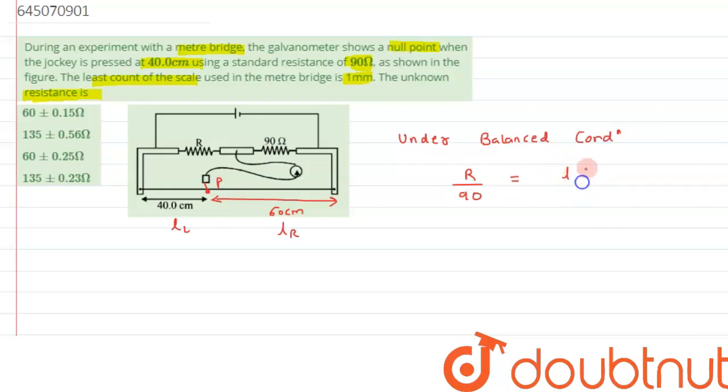From here we can say LL is given as 40 centimeter divided by LR which is 60 centimeter, times 90. So that will give us the value of unknown resistance capital R. This comes out to be 60 ohms.